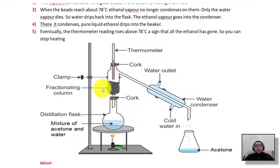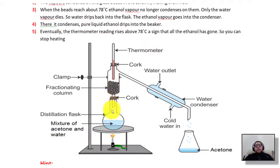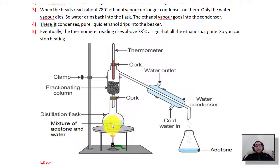This is the fractional distillation apparatus. It looks like simple distillation, but there is one key difference: the fractionating column. The fractionating column is what differentiates fractional distillation from simple distillation. We have a source of heat, and a mixture of acetone and water — two miscible liquids forming one layer — placed in the round-bottomed distillation flask.